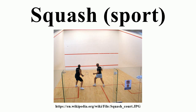Cold squash balls have very little bounce. Small colored dots on the ball indicate its dynamic level, and thus the standard of play for which it is suited. The recognized speed colors indicate the degree of dynamism. Some ball manufacturers such as Dunlop use a different method of grading balls based on experience, with a name to help choose a ball appropriate for one's skill level. The four different ball types are intro, progress, competition and pro.